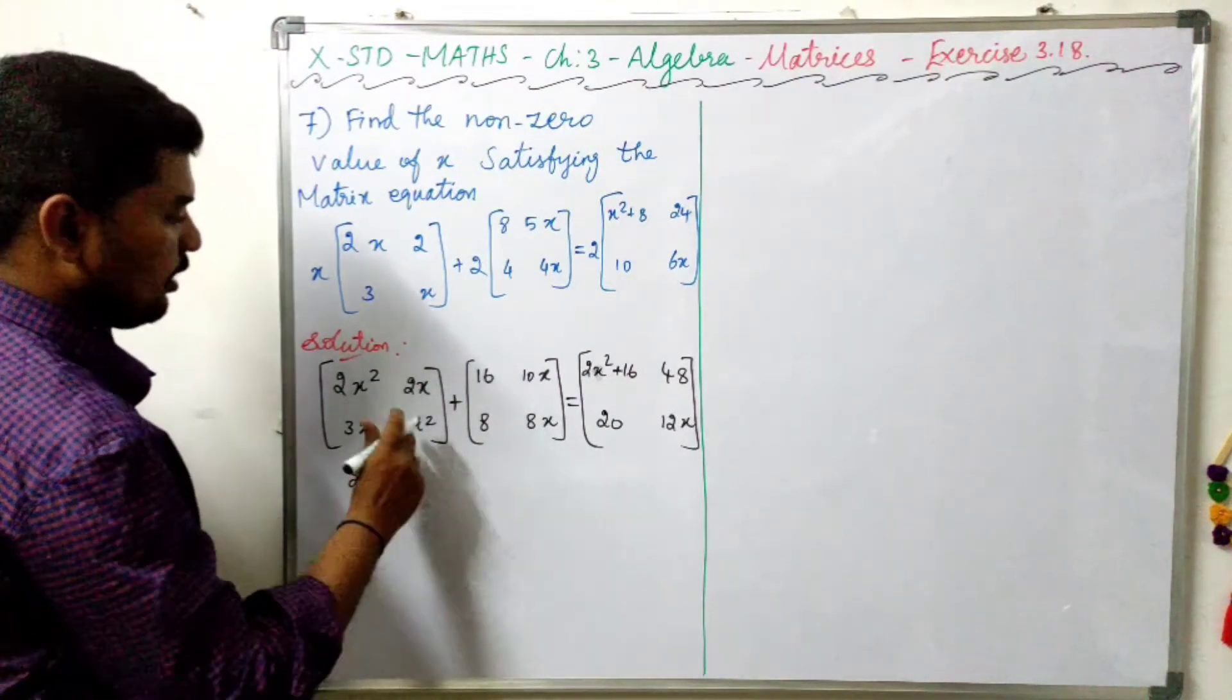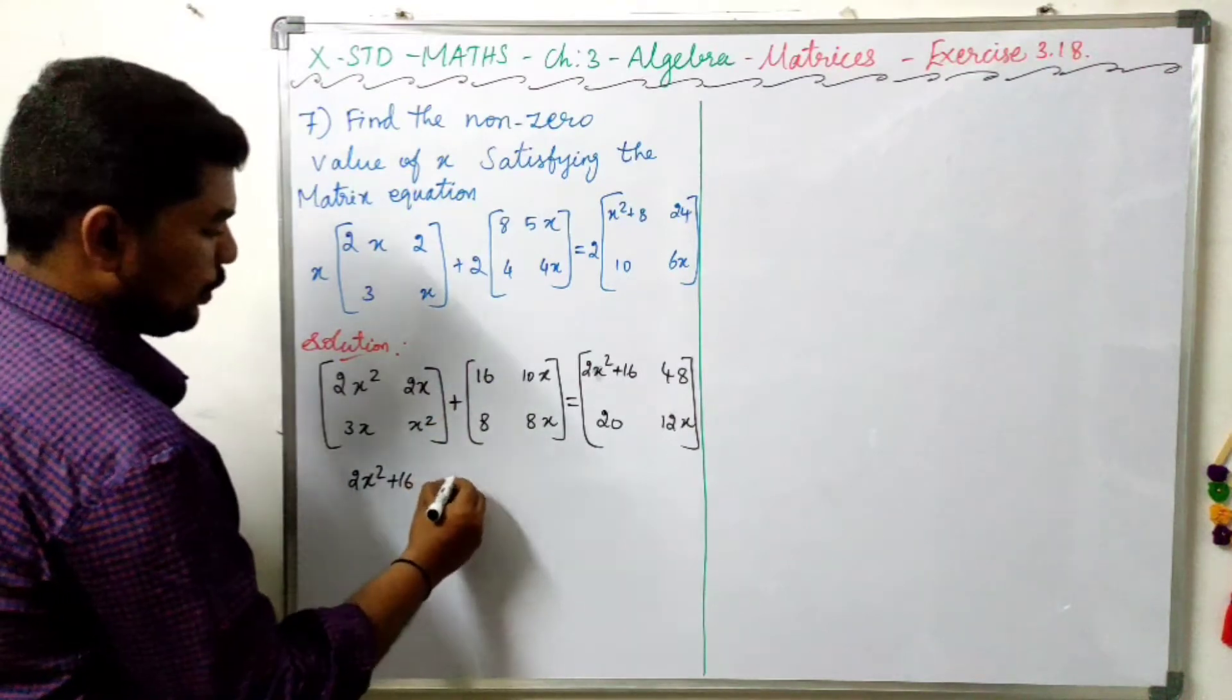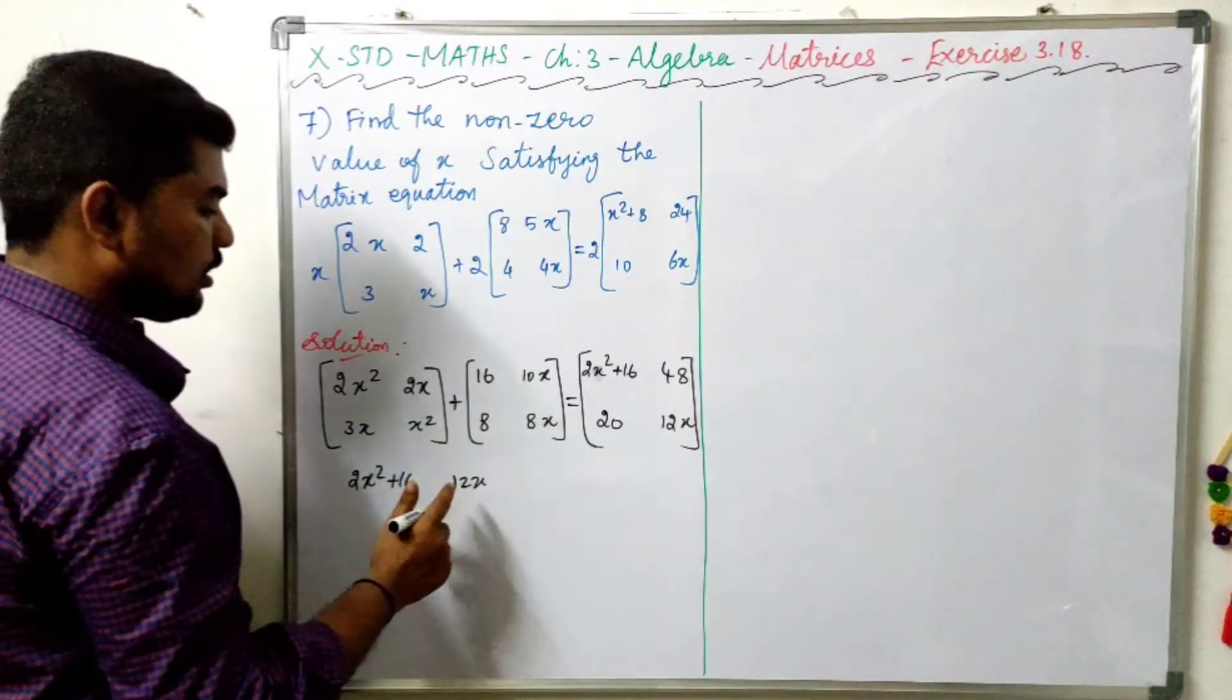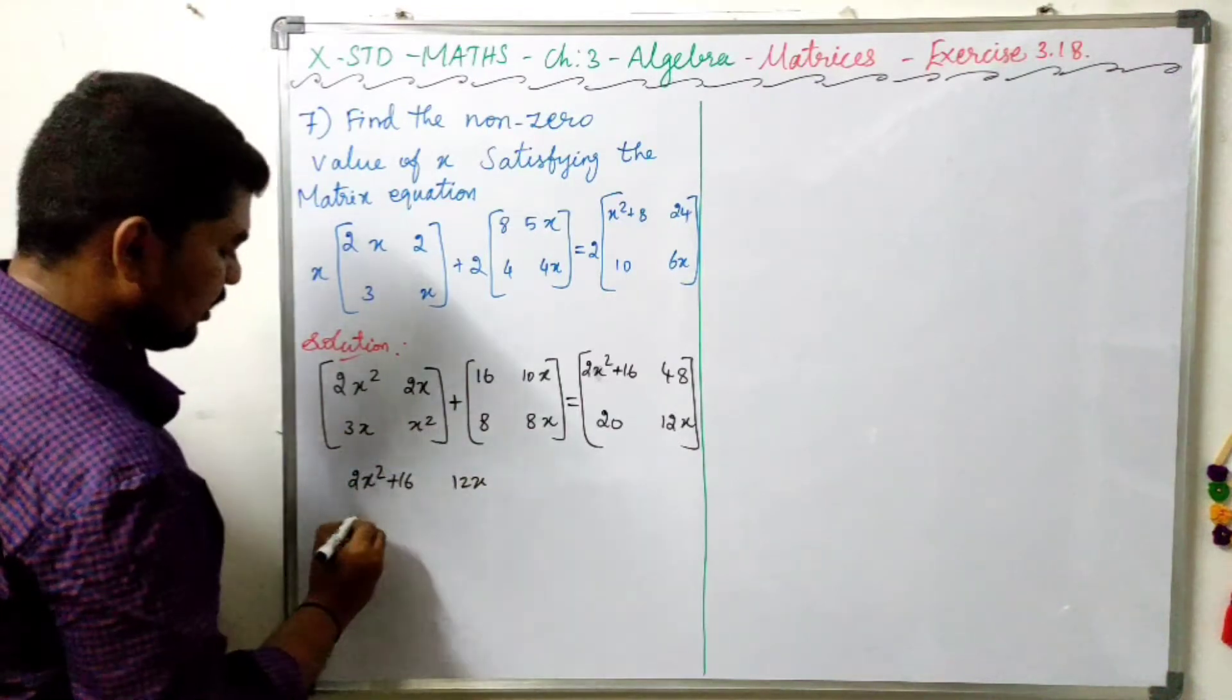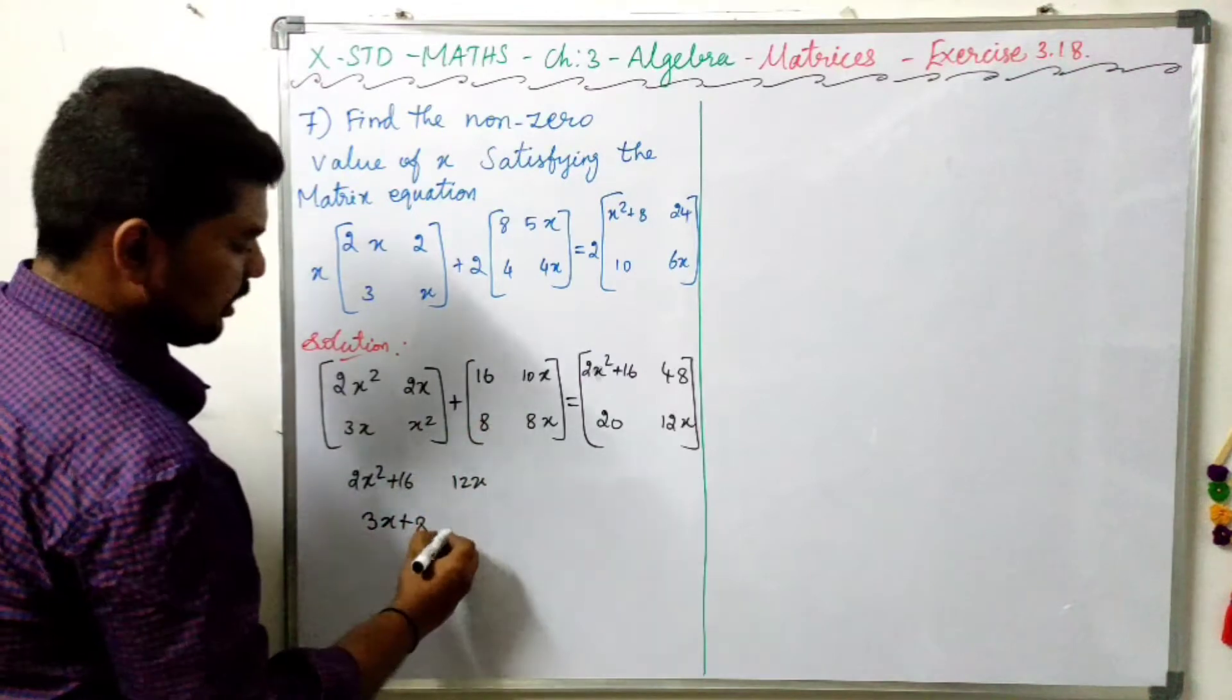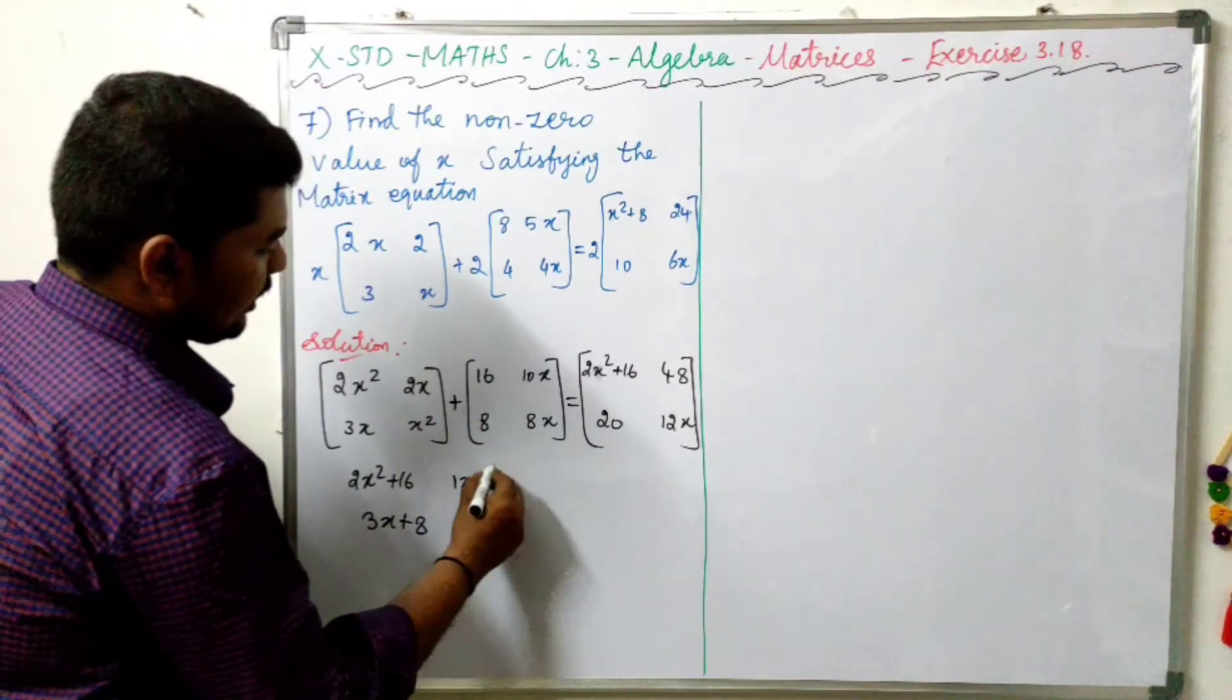2x plus 10x equals 12x. 3x plus 8x. 3x plus 8x. x square plus 8 is x square.